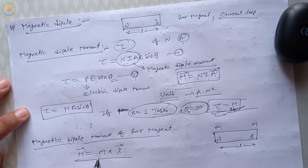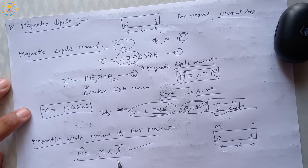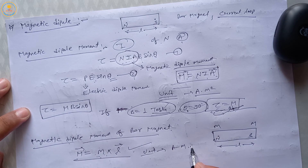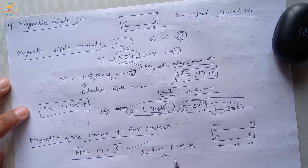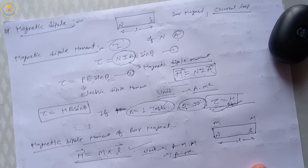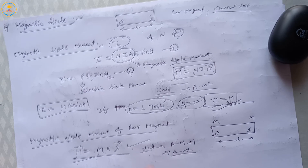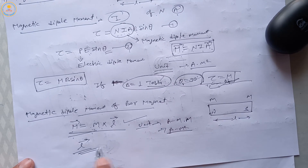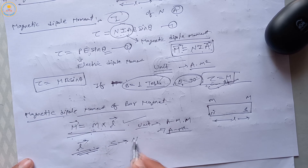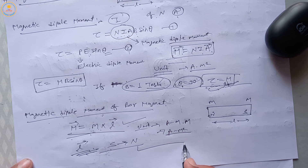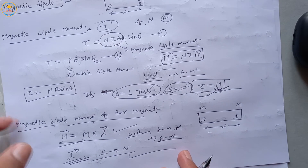This is a vector quantity. The direction of this magnetic dipole moment is along the direction of the effective length vector L. The direction of effective length is from south pole to north pole. So the direction of magnetic moment is also from south to north pole. The unit of pole strength is ampere·meter, and the unit of length is meter, so the unit of magnetic moment is ampere·meter².